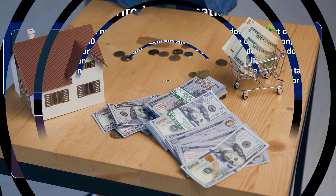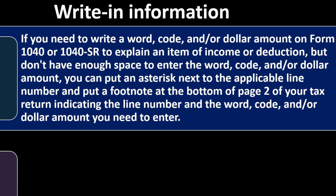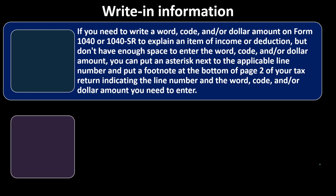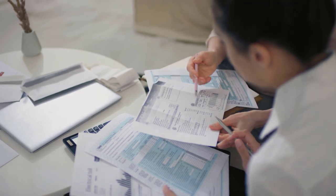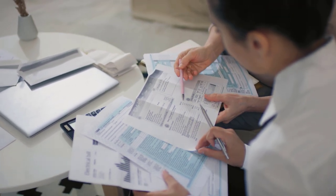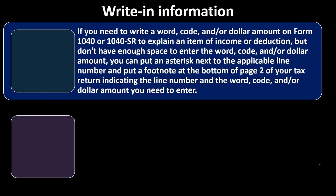you can put an asterisk next to the applicable line number and put a footnote at the bottom of page 2 on your tax return, indicating the line number and the word, code, and/or dollar amount you need to enter. There could be some instances, for example,